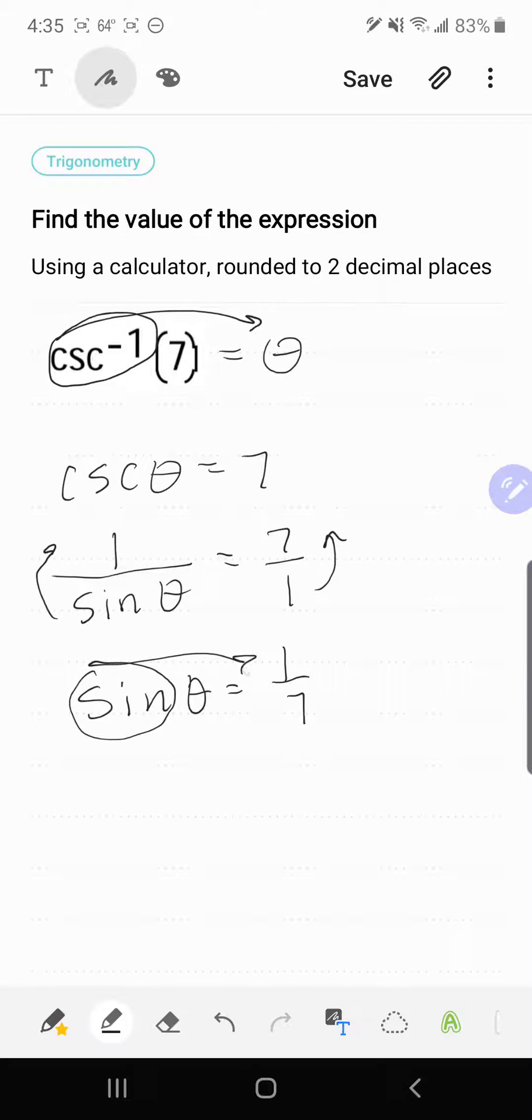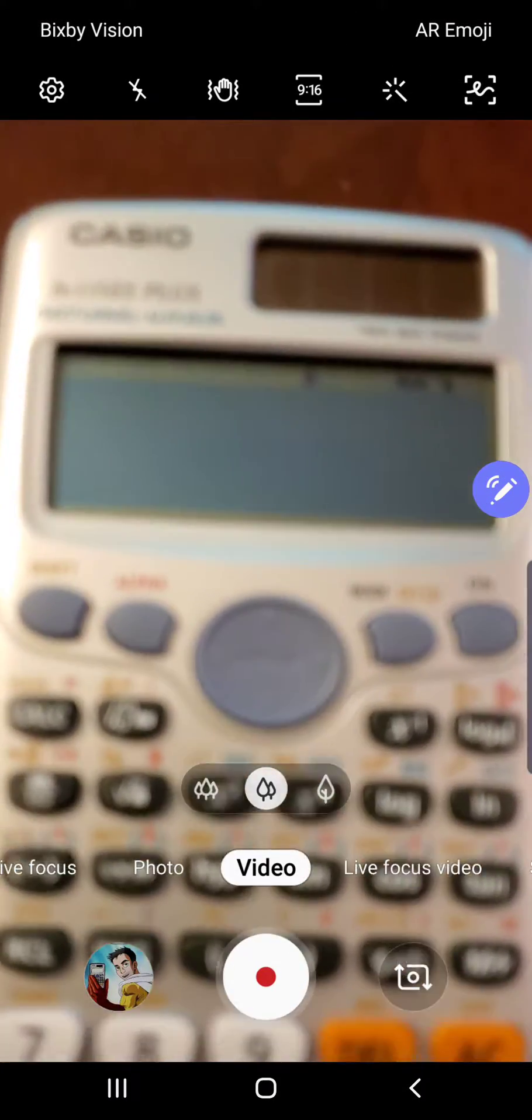Moving the sine function over is going to isolate theta, and that's going to give me the inverse sine of 1/7. And so now we can go to our handy dandy calculator and calculate the inverse sine of 1/7.